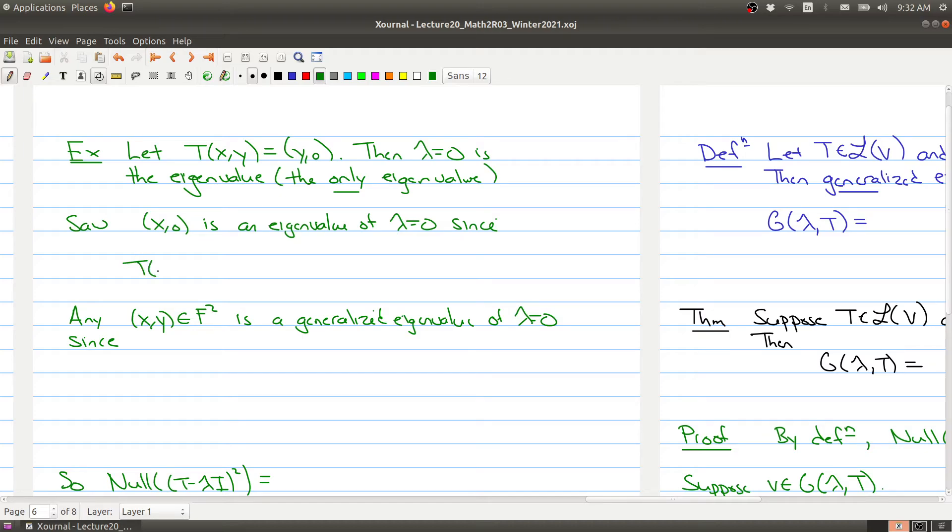We saw that (x,0) is an eigenvector of λ. Why is that? When we plug in (x,0), it gets sent to the vector (0,0), and that's the same thing as zero times the vector (x,0).